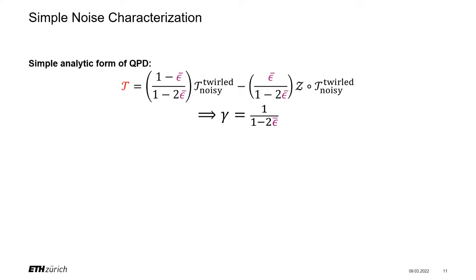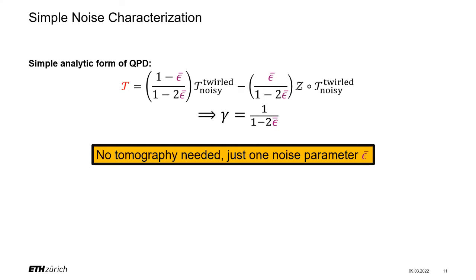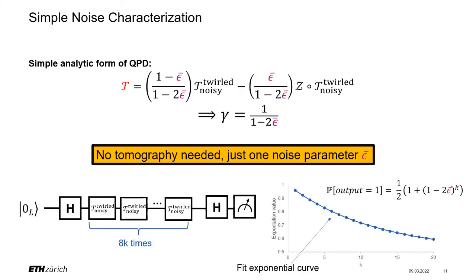Tailoring our noise to be of Pauli Z-type means we can find a very simple analytic form of our quasi-probability decomposition. We can write our ideal T-gate in terms of the noisy twirled T-gate, and the noisy twirled T-gate followed by a Z gate. The gamma factor of this decomposition is precisely 1 / (1 - 2 * epsilon_bar). The great thing is that to do this quasi-probability simulation, we only need to figure out this one single noise parameter epsilon_bar — not tons of tomography. In practice, you can estimate epsilon_bar by preparing a logical plus state, applying the twirled noisy T-gate 8k times (k a natural number), measuring in the plus/minus basis, and fitting the exponential decay of the expectation value versus k.